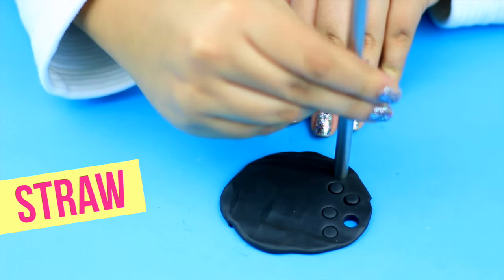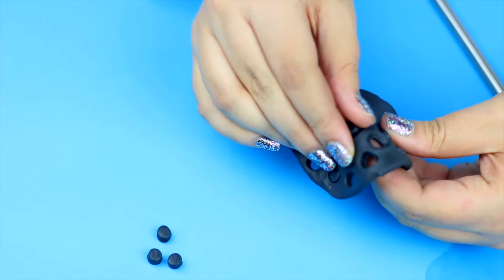Use a straw as a mold to make a bunch of tiny balls or mini circles of clay. This will be the Oreo cookies.